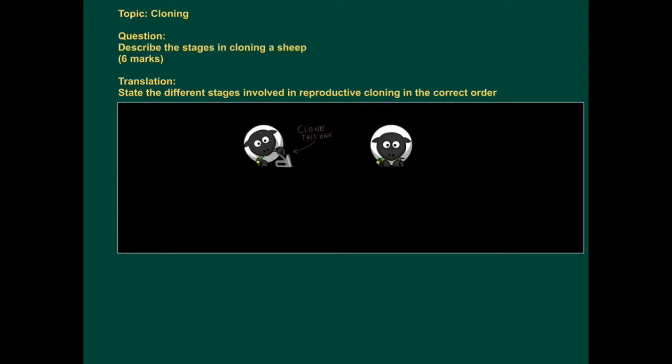This exam application tutorial looks at the topic of cloning. The question is, describe the stages in cloning a sheep. In other words, state the different stages involved in reproductive cloning in the correct order.